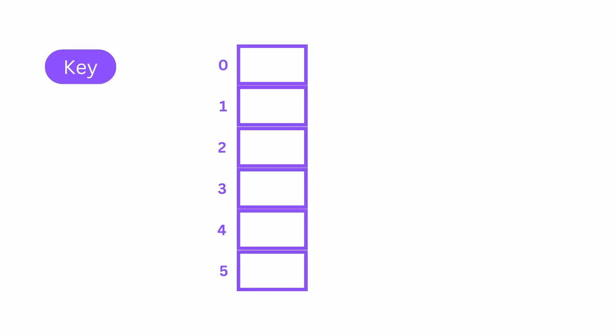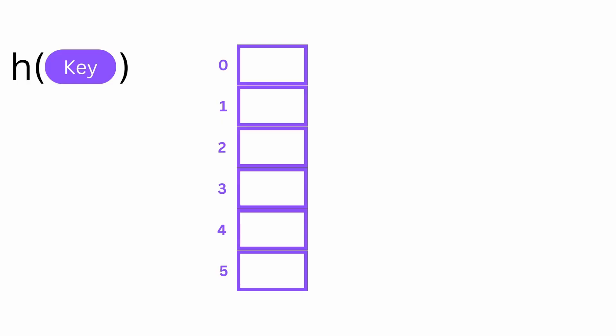Instead, we can come up with some function that takes the properties of the object we want to store in our table and uses them to generate a number. Then we can find the remainder of the division with the table size using the hash value we generated in order to generate an index for our object. The reason we need the modulus step is so that the index we generate is always less than the size of the table. This is called hashing by division.